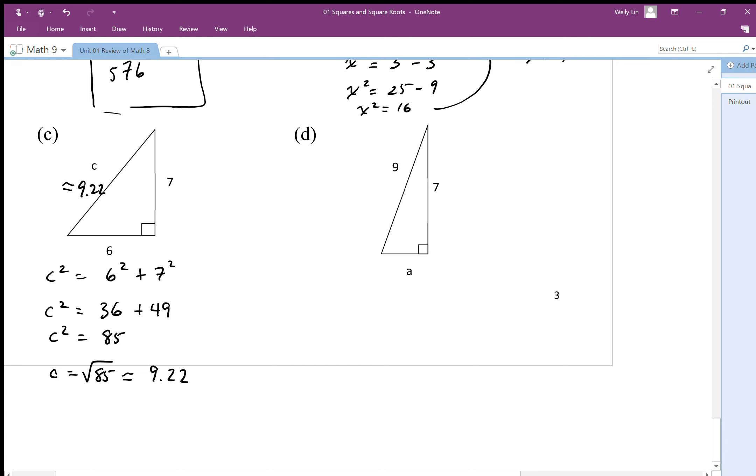For d, we want to find the shorter side, so we need to subtract. So I'm going to take my big square, 9 squared, and I'm going to subtract my smaller square to get the small square. So I end up with 81 squares minus 49 squares equals a squared. So the number of squares that make up a is going to be 32 squares.